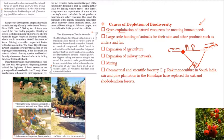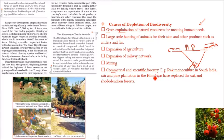Natural forests would come up by themselves if left alone. But for commercial and scientific forestry we plant trees beneficial to us — like teak monoculture in South India and chir pine plantations in the Himalayas — replacing naturally growing forests of oak and rhododendron. This depletes natural biodiversity even though commercial forestry has its own purpose.